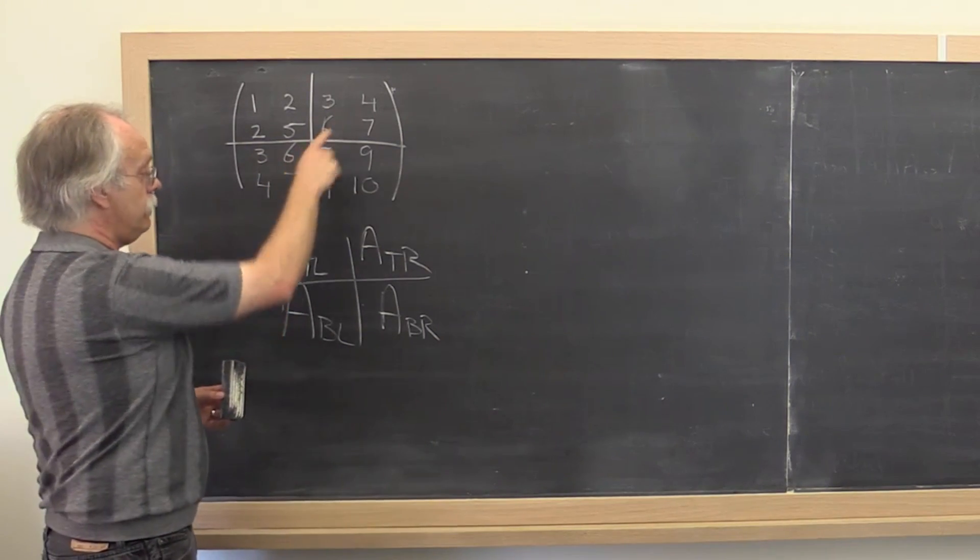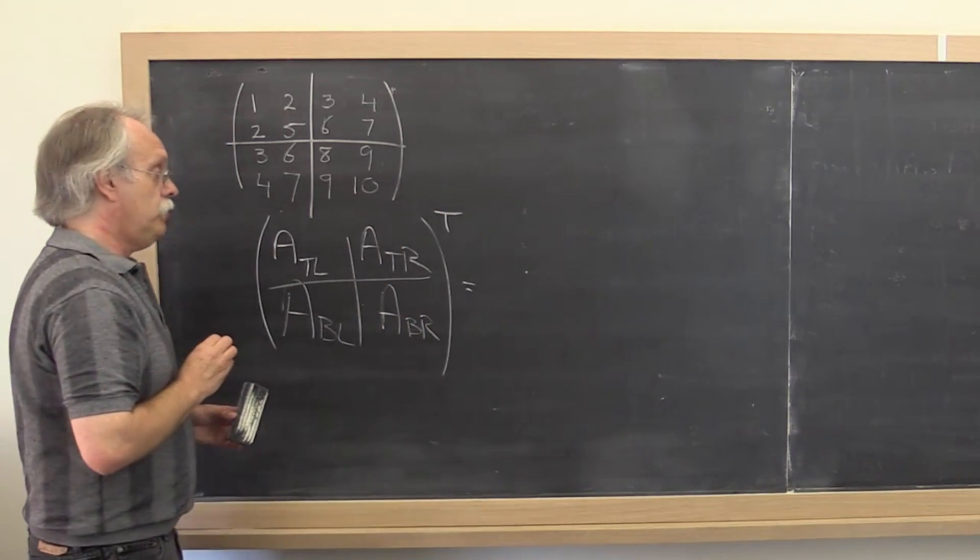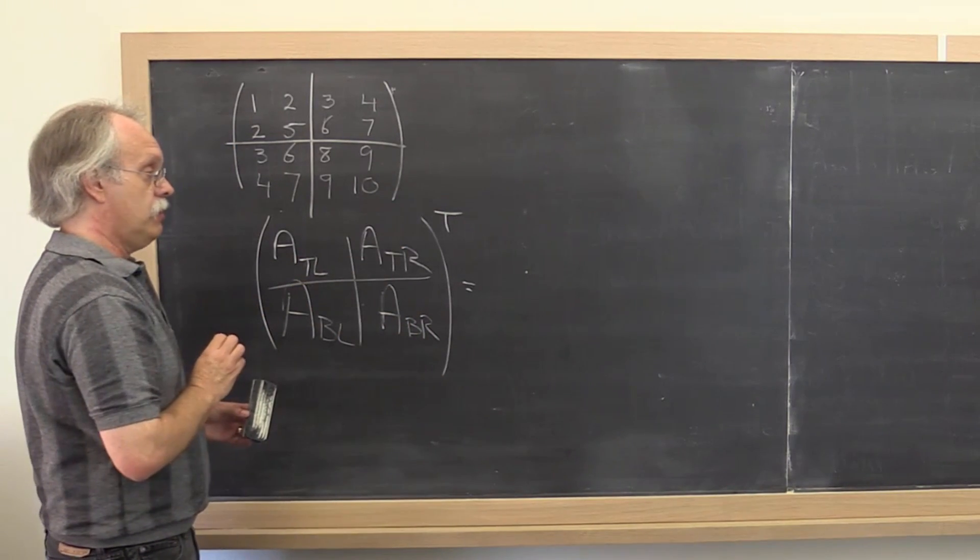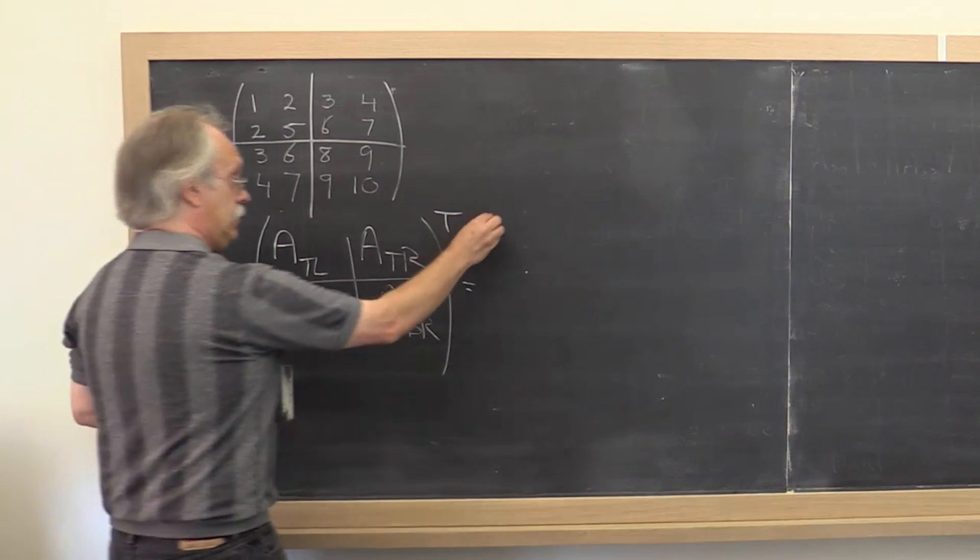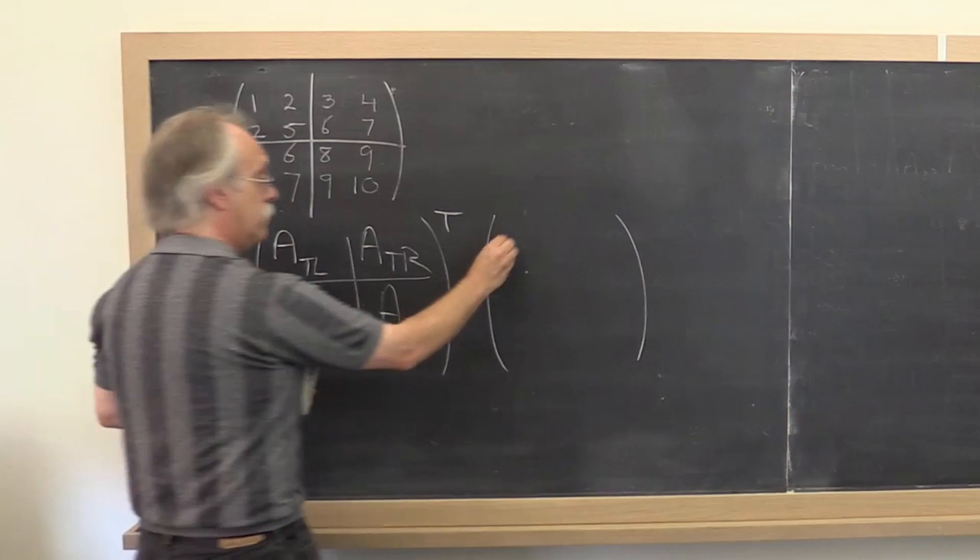And what else do we notice? Well, it's a symmetric matrix. And something that you may have learned is that if you transpose a partition matrix, then it's the same as transposing a two-by-two matrix. What would that mean?